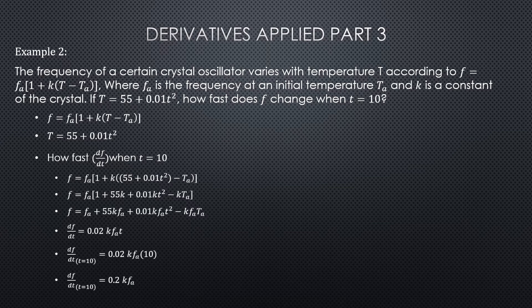Alright, the frequency of a certain crystal oscillator varies with temperature T according to f equals fₐ times the quantity (1 minus k times (T minus Tₐ)), where fₐ is the frequency at an initial temperature Tₐ and k is a constant of the crystal. If T equals 55 plus 0.01t², how fast does f change when t equals 10?